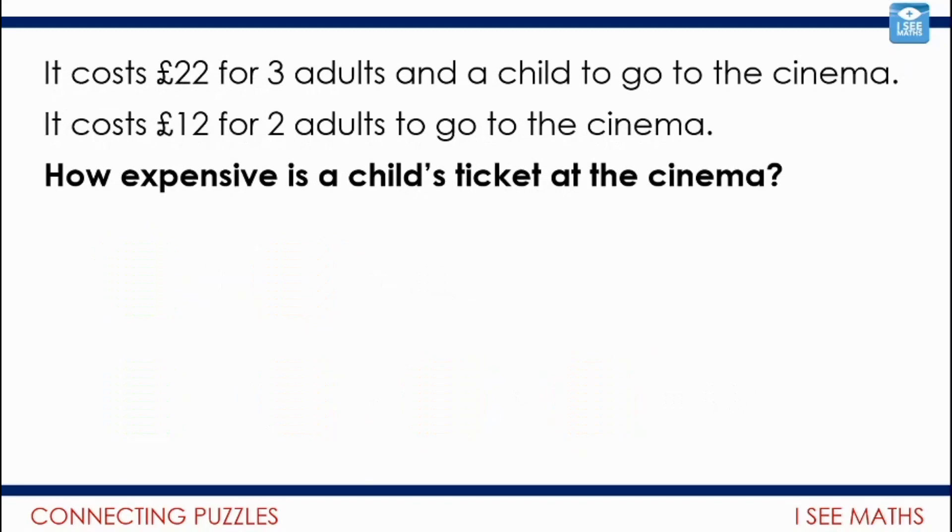So let's have a look at something that's similar. So here's a worded question. I wonder how you can apply that to help you with this. It costs £22 for three adults and a child to go to the cinema, and it costs £12 for two adults to go to the cinema. So how expensive is a child's ticket at the cinema? I'm going to invite you to do one of two things. One is draw a picture that would represent that or some kind of a number sentence. And the second thing is to see if you can work out the answer. Pause the video and have a go.